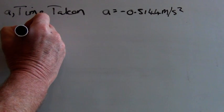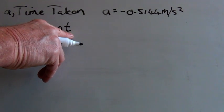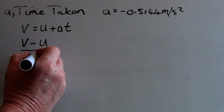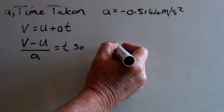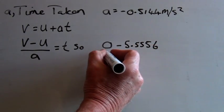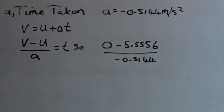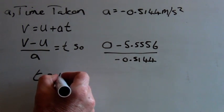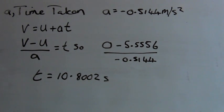Now we use V equals U plus AT, and we can rearrange this to get T on its own. This gives us V minus U divided by A equals T. So again V is 0, 0 minus U which was 5.5556, divided by A which is minus 0.5144, and this equals T equals 10.8002 seconds, so rounding it off is 10.8 seconds.